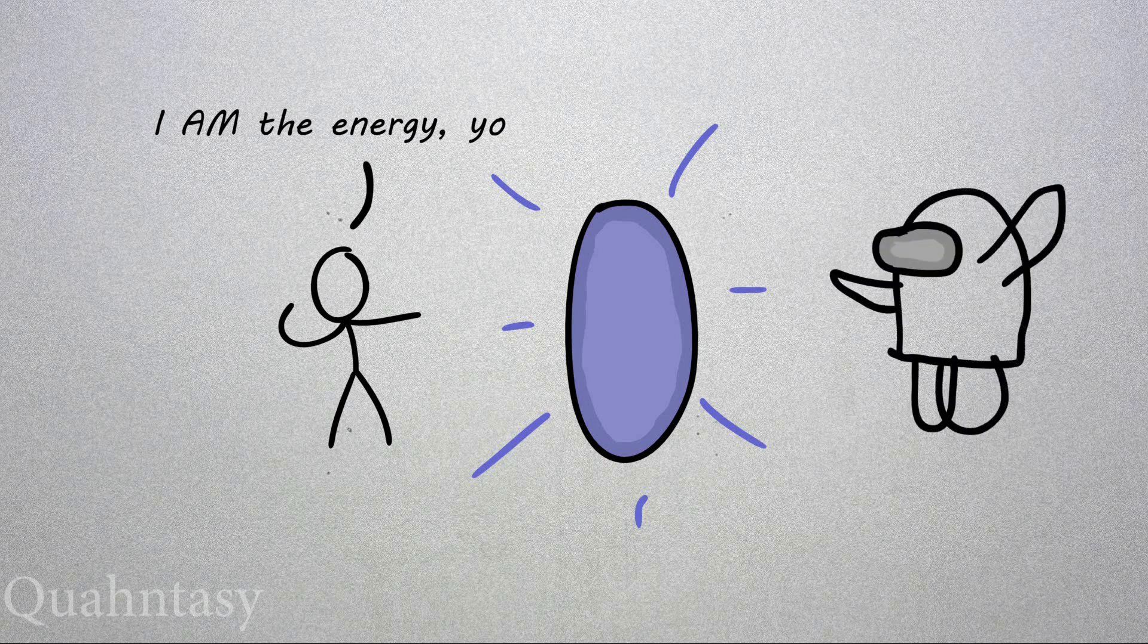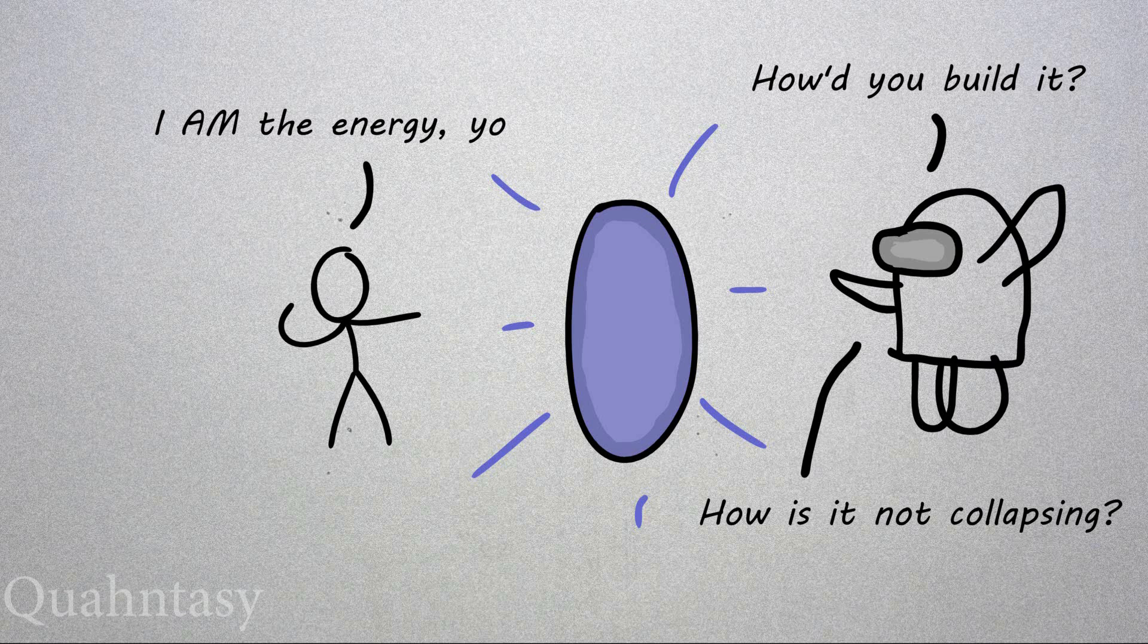The problem is that no one knows how to build a wormhole, or once you have built it, how to keep it from collapsing. Keeping wormholes open requires a form of negative energies. Nobody knows how to make negative energies.